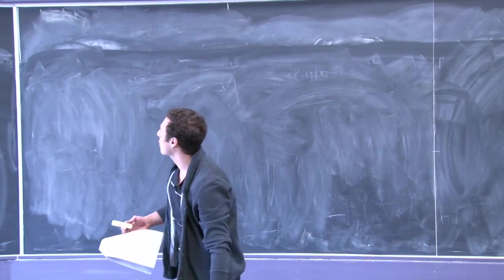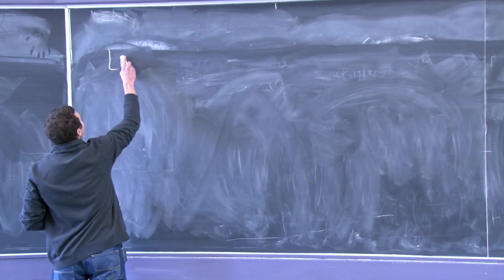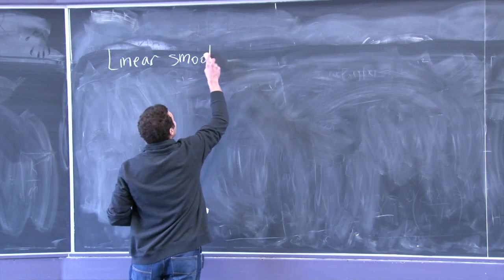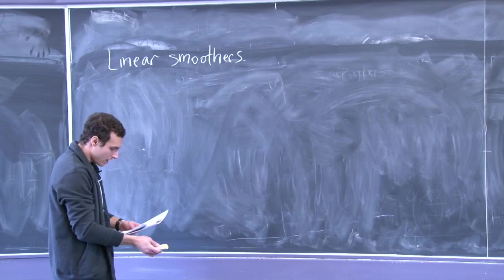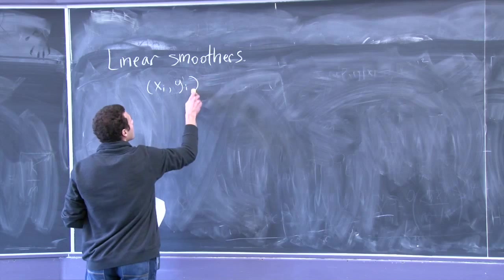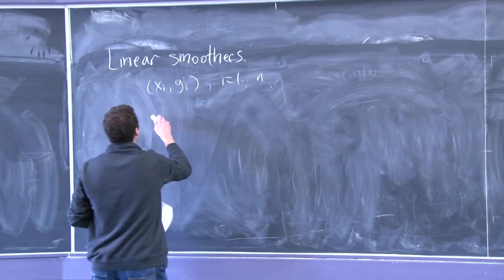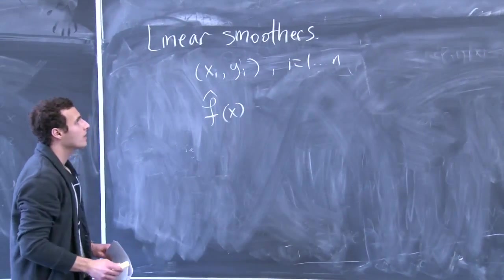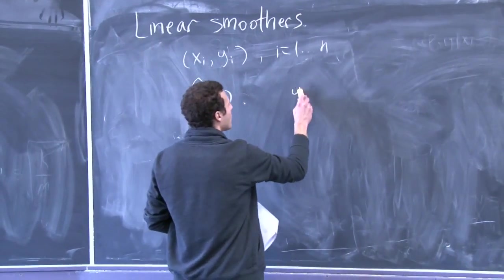Everything we've talked about so far fits into the class of what we call linear smoothers. We talked about these in the second lecture. These are estimators where we get some training samples (x_i, y_i) for i equals 1 to n, and we produce some fitted function f-hat of x. Linear smoothers have the following property: if I look at y-hat, which is the vector of predictions I would make at each of these input points x_i — what are the smooth values of y_i — which is given by f-hat of x_1 all the way through f-hat of x_n.